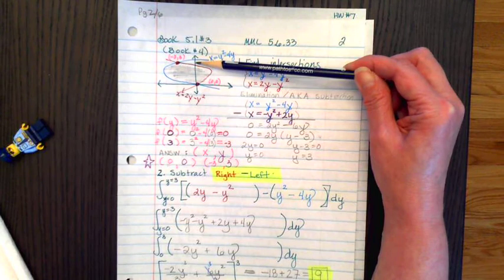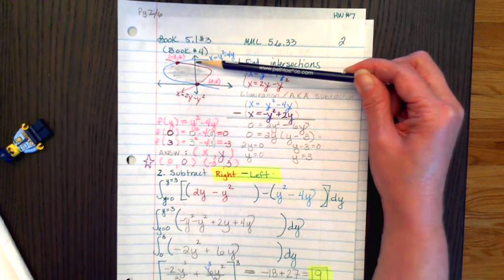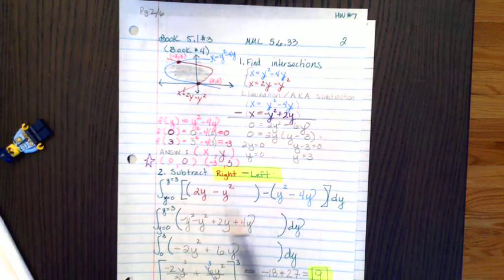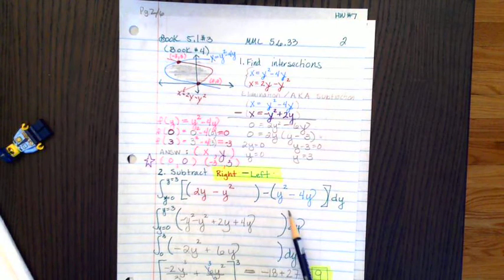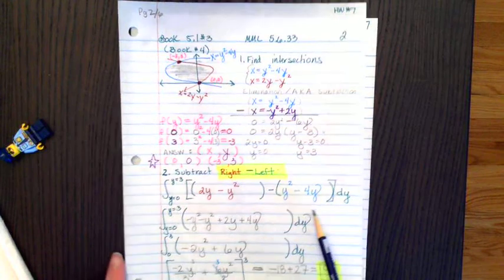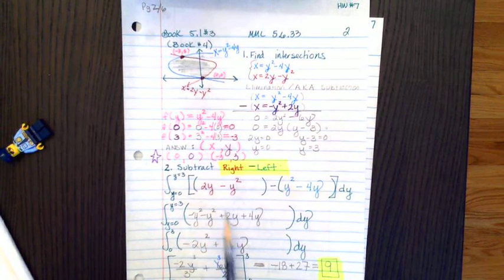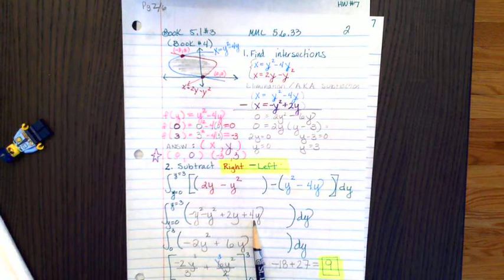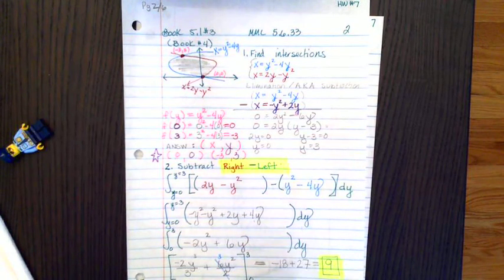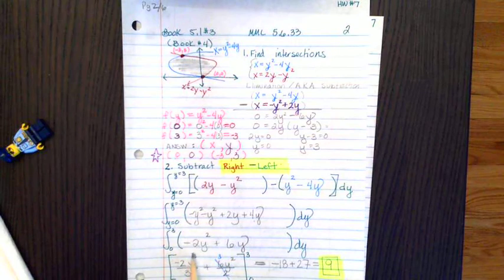So we're going to integrate from y equals 0 to y equals 3. We've got our rightmost function, 2y minus y squared, minus the leftmost function, y squared minus 4y. Simplifying that, we get 2y minus y squared plus 4y, integrated over dy. When we simplify this, we get negative 2y squared plus 6y. When we integrate that, you get negative 2 thirds y cubed plus 3y squared from y equals 0 to y equals 3.